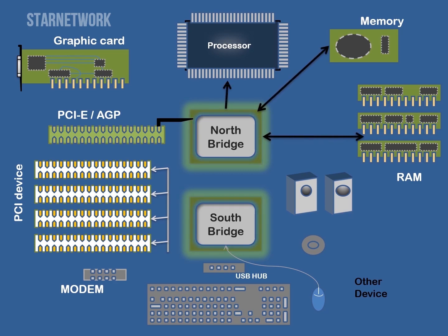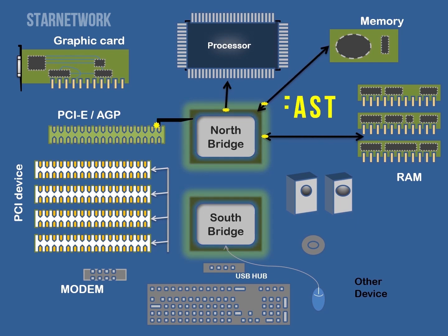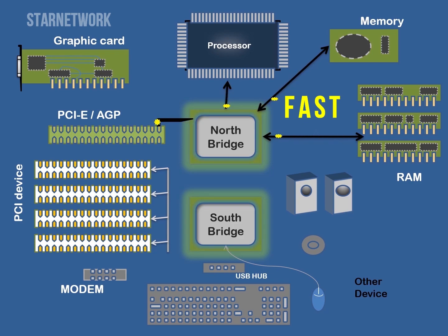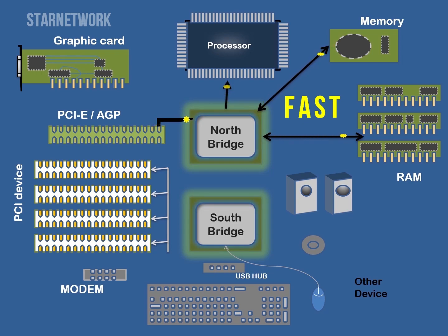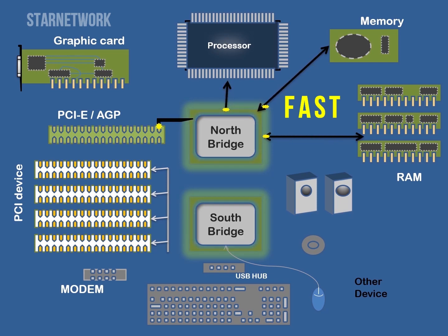The North Bridge handles a computer's faster communication requirements and controls communication among the CPU, RAM, ROM, the basic input/output system, the accelerated graphics port (AGP), and the South Bridge chip.